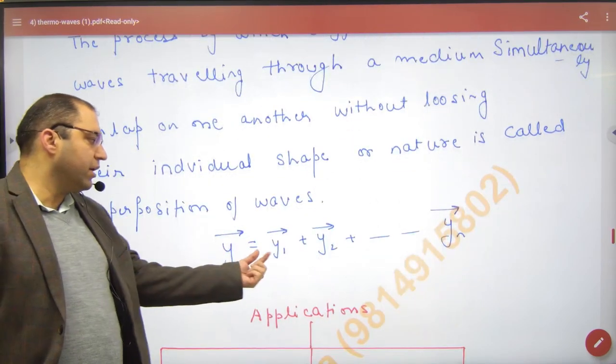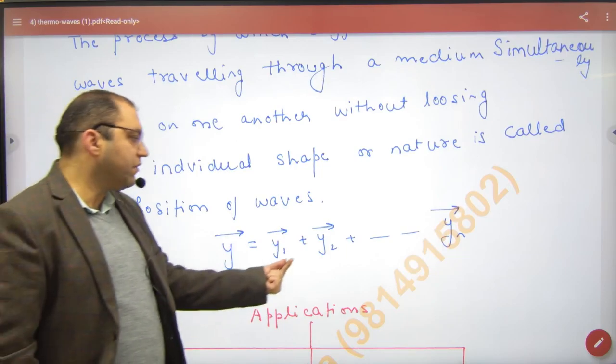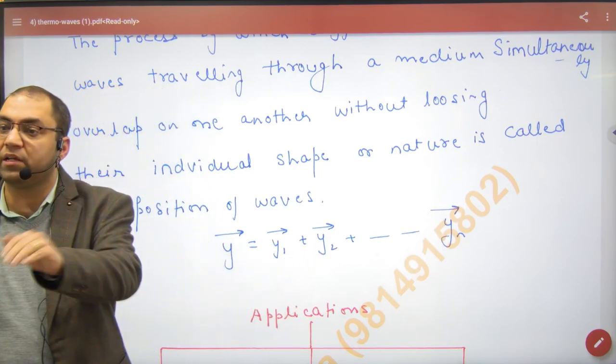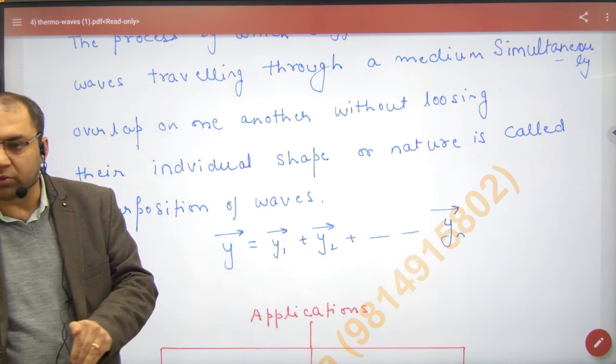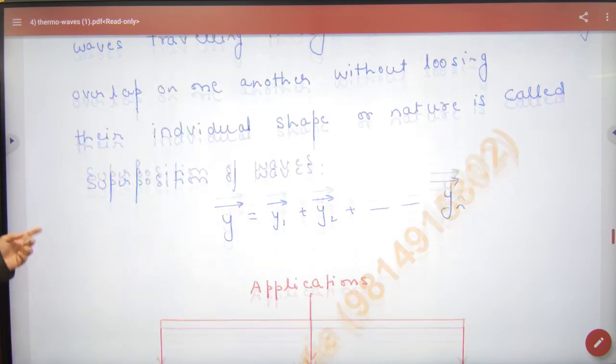And what is the vector sum? The first wave at any instant has displacement y1, the second wave has displacement y2. So many waves enter at a particle - the net displacement follows the vector law. This is superposition.